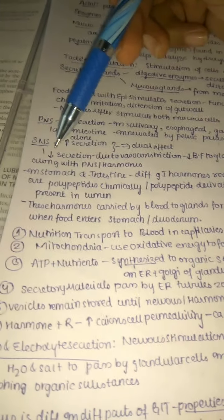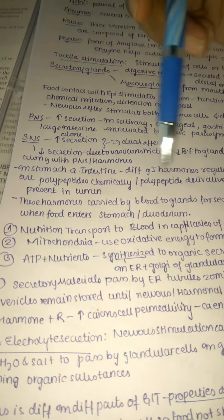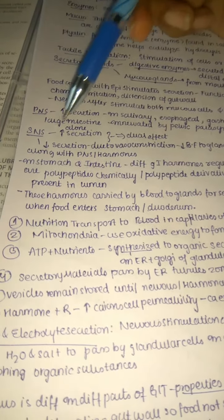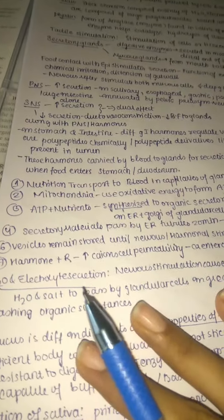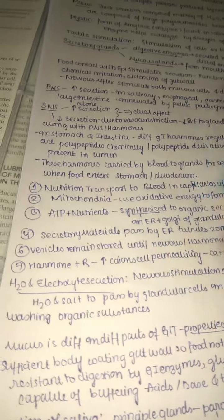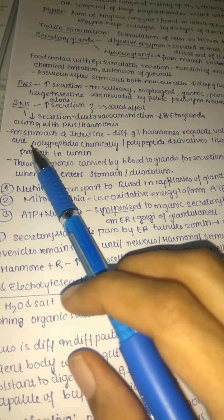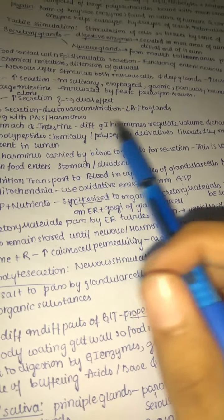Decreased secretion due to vasoconstriction: whenever the sympathetic system is activated, blood vessels constrict, causing low blood flow to the gland. Because of this low blood flow, the glands decrease their secretion. In the stomach and intestine, different gastrointestinal hormones regulate the volume and character of secretion.